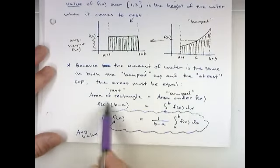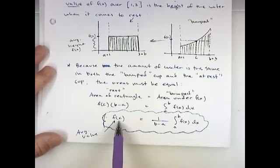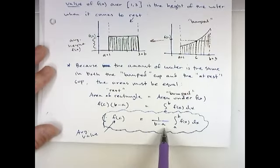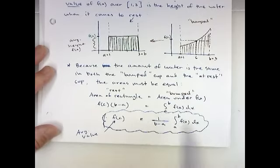So if I solve for F of C, which is my average height, I just have to divide by B minus A. And this is the formula you may have seen in the book. The average value of a function is 1 over B minus A times the integral of your function from A to B.